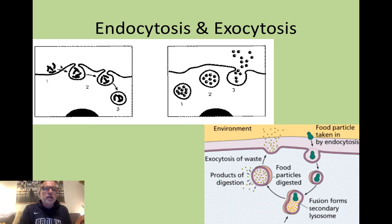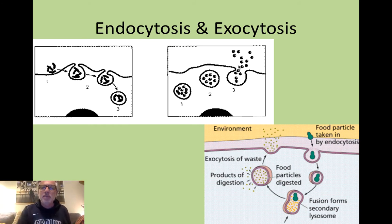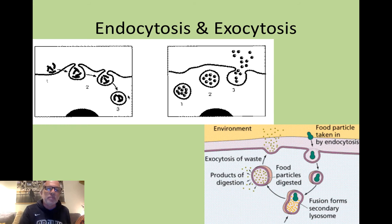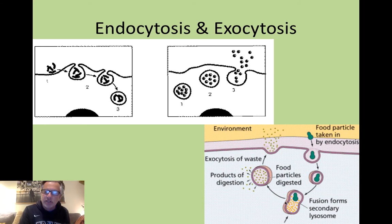Here's a picture: you can see food outside a cell gets engulfed, put into a vesicle, and now it's inside. The opposite process shows a vesicle approaching the cell membrane, fusing into it, and discarding its contents outside. To digest the food brought in, it's going to merge with a lysosome — and indeed, we see a food particle taken in by endocytosis, fusion with a lysosome, and digestion. The building block molecules then diffuse into the cell, and waste products are removed by exocytosis.